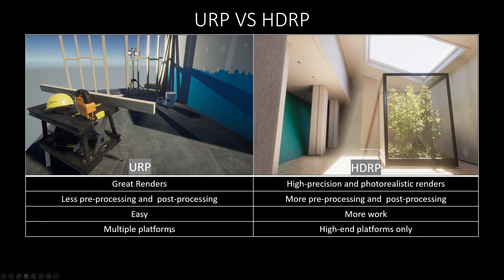The URP works across multiple platforms from mobile to high-end consoles and PCs. On the other hand, the HDRP targets high-end platforms only, including Windows, Linux, PS4, PS5, Xbox One, Xbox Series, and desktop VR.